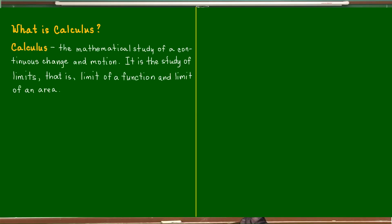When you talk of change, there are so many quantities changing in the real world — marginal cost, inflation, areas in geometry, profit, and many more. When you talk of change and motion, the right mathematics is calculus. That's why calculus is defined as the mathematical study of continuous change and motion. To deal with this change and motion, we talk about limits — the limit of a function and the limit of an area. Some books define calculus as the study of limits.